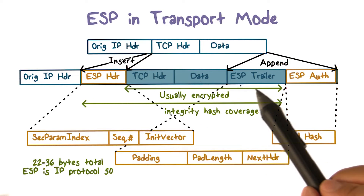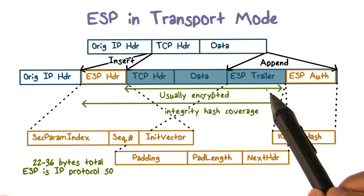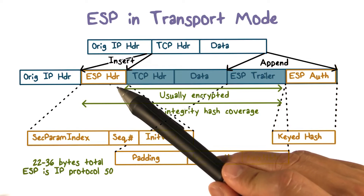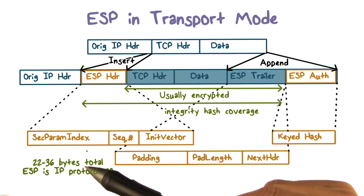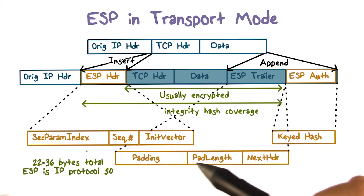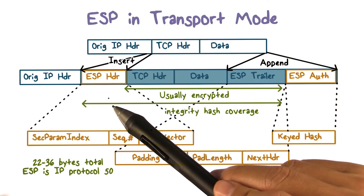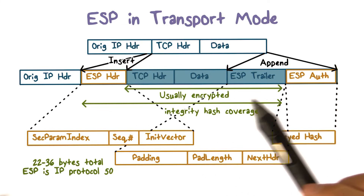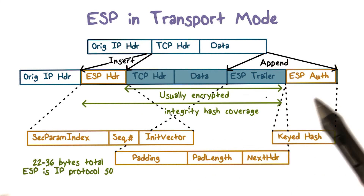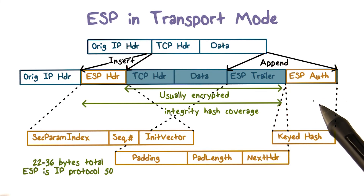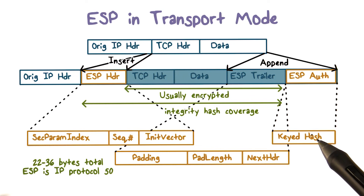The packet payload and the ESP trailer are both encrypted, but the ESP header is not, because it provides information — in particular, the security parameter index — that tells the receiving end how to decrypt the payload, for example which algorithm and shared secret key to use. The ESP header and the encrypted payload are then hashed together with a secret key, and the hash value is stored as the message authentication code for the receiver to verify the authenticity and integrity of the message.